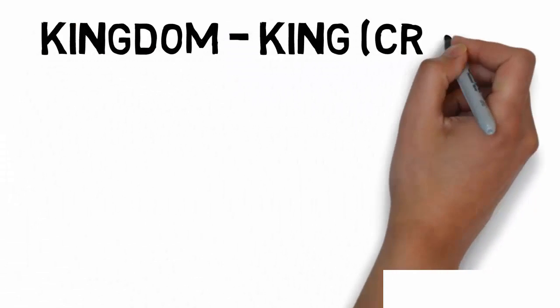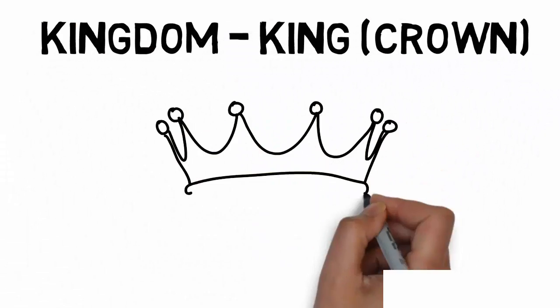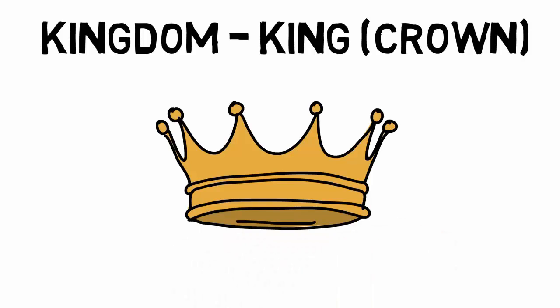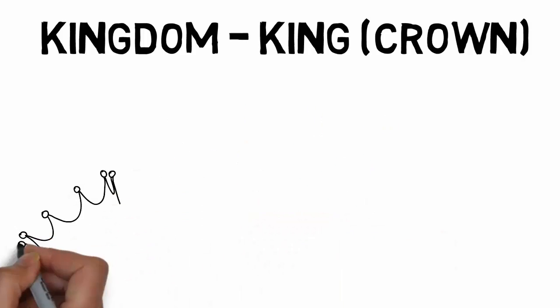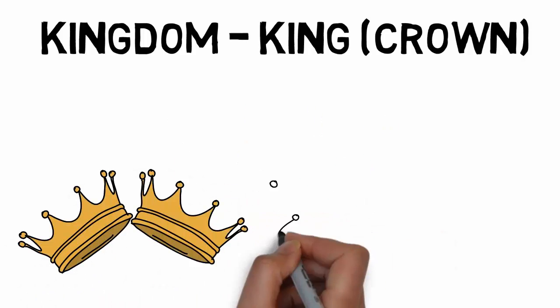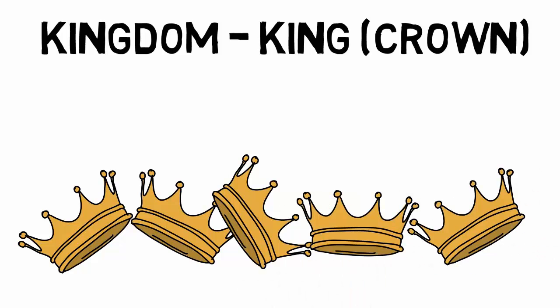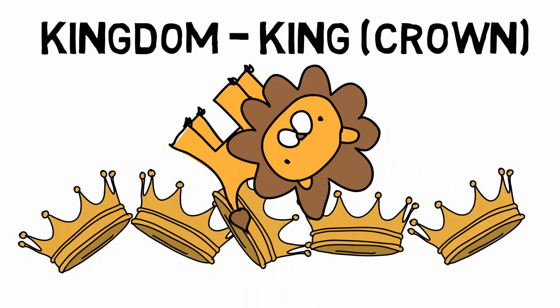The next level is kingdom. Kingdom has the word 'king' in it, so maybe that makes you think of crowns. So maybe you picture this lion having a crown, but since the lion is the king of the jungle, it has a lot of crowns, and this lion starts to swim in all the crowns it has.